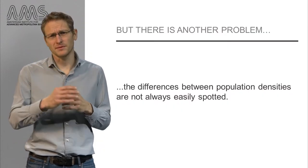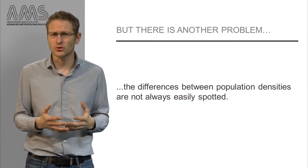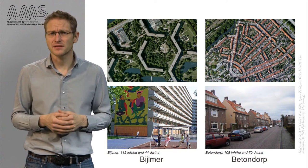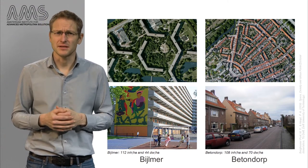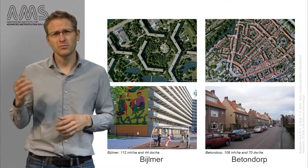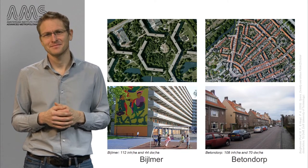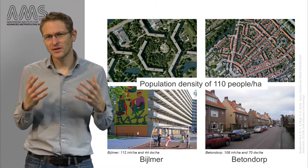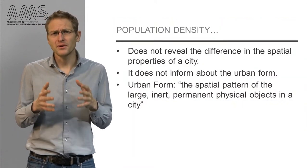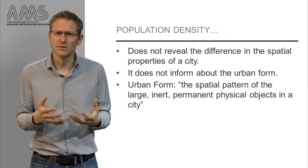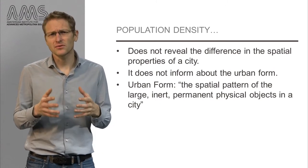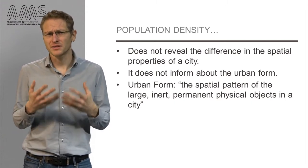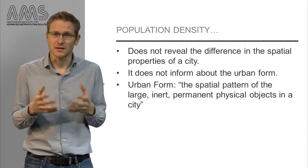But there is another problem: the different population densities are difficult to spot visually. Look at the next slide. Which of these two urban areas in the Netherlands has the higher population density — Vilmar on the left or Betongdorp on the right? Well, they both have the same population density, but they look very different. So population density does not reveal anything about the spatial patterns of a city. In other words, it does not inform about the urban form, which is defined as the spatial patterns of the permanent physical objects in a city — the buildings and the infrastructure.